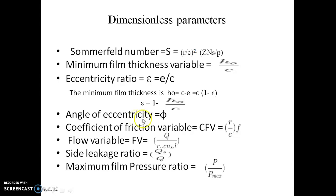Then angle of eccentricity or attitude angle denoted by φ. It gives the angular position of minimum film thickness with respect to the load direction. Next is coefficient of friction variable CFV = (r/c) × f, where r is radius of shaft, c is radial clearance, and f is coefficient of friction.